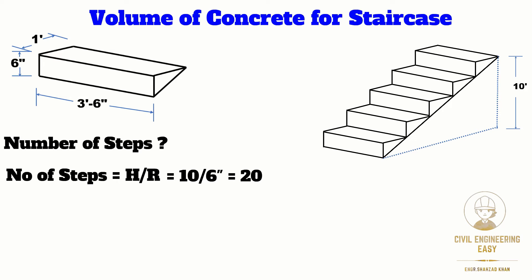From this number of steps, we can find the total run of the staircase by multiplying the width of the tread, which is 1 foot, with the number of steps. So the run equals 20 multiplied by 1 foot, which equals 20 feet.